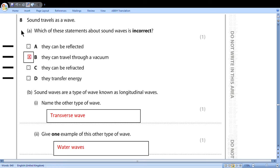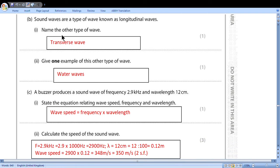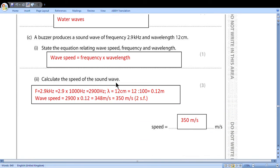Question 8. Sound travels as a wave. Which of these statements about sound waves is incorrect? They can be reflected, yes. They can travel through a vacuum, no. They can be refracted, yes. They transfer energy, yes. Sound waves are a type of wave known as longitudinal. Name the other type of wave. Transverse. Give one example of this other type of wave. Water waves. A buzzer produces sound of frequency and wavelength. State the equation linking wave speed, frequency and wavelength. Calculate the speed of the sound. So we should change frequency to Hertz by multiplying by 1000, centimeters by dividing by 100. Then we substitute these values. And we realize that we need only two significant figures. Because here two significant figures, here two significant figures. So the answer we approximate to two significant figures: 350 meters per second. These are the values that you probably should remember to be sure that you get the correct answer.